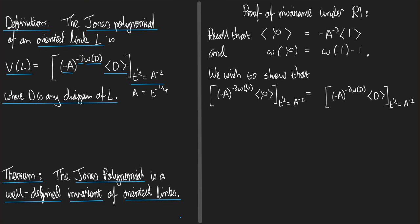How do I prove a theorem like this? Well, this is a theorem of the kind we've proved several times now in the course. I need to prove that if I change my diagram D by a Reidemeister move, then this right-hand side here doesn't change.